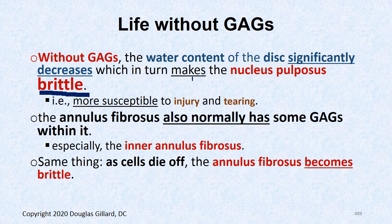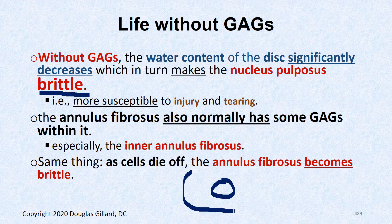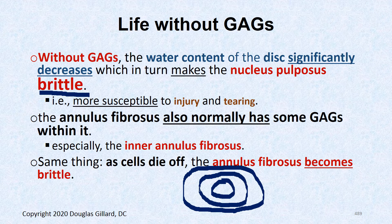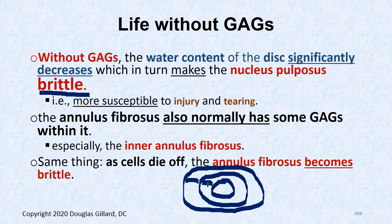Torsion can start ripping up the disc. The annulus fibrosus also has GAGs, especially the inner portion. Looking at the overhead view of a disc, there is a nucleus pulposus, an inner annulus fibrosus with a higher percentage of proteoglycan — similar in composition to the nucleus — and an outer annulus fibrosus that is almost entirely type 1 collagen. The boundary between nucleus pulposus and inner annulus is indistinct; they look very similar.